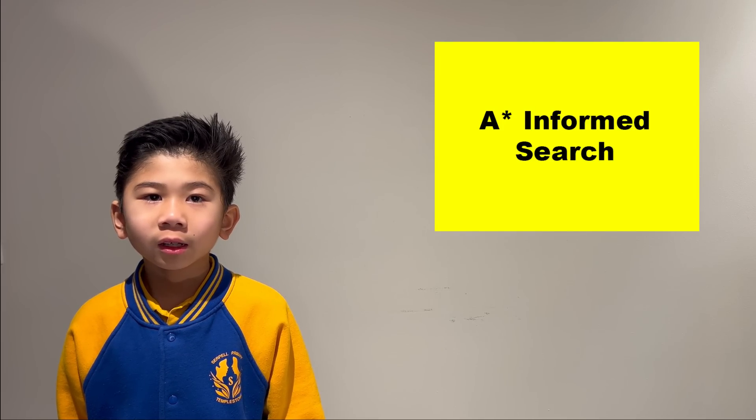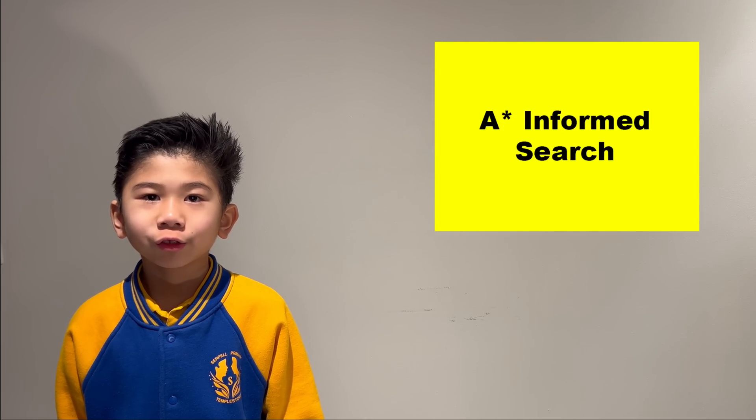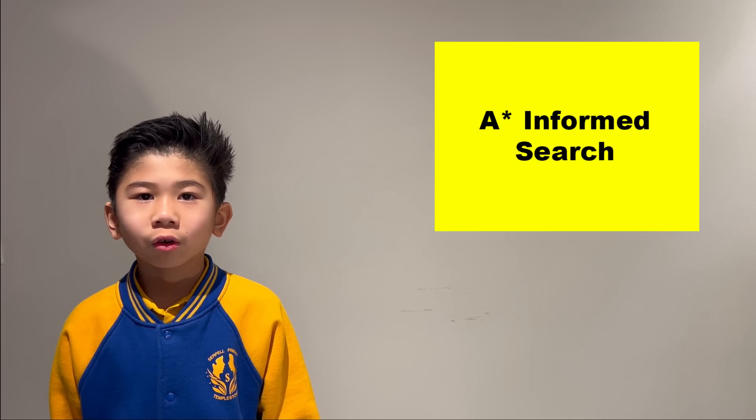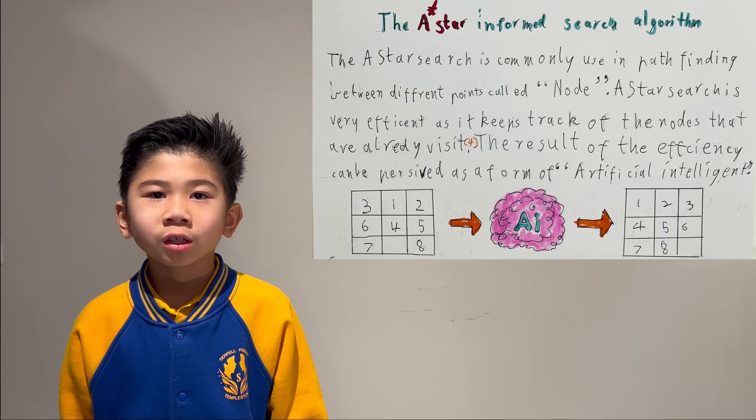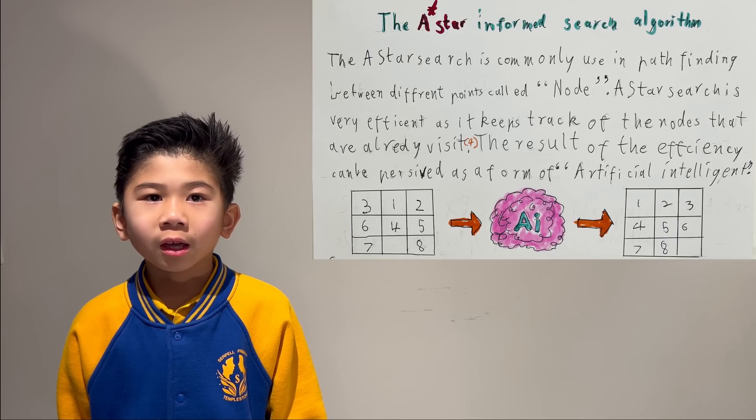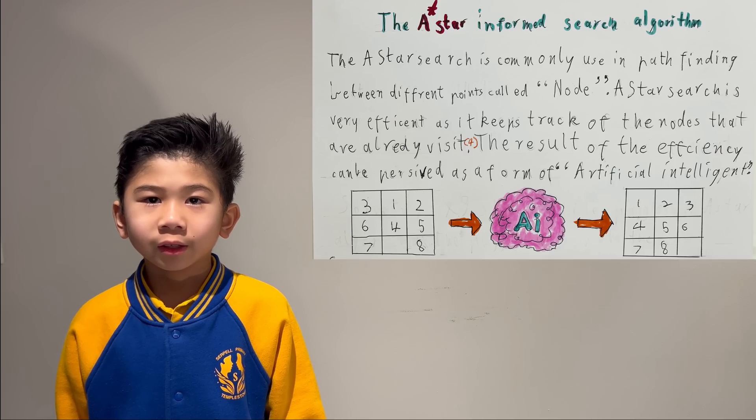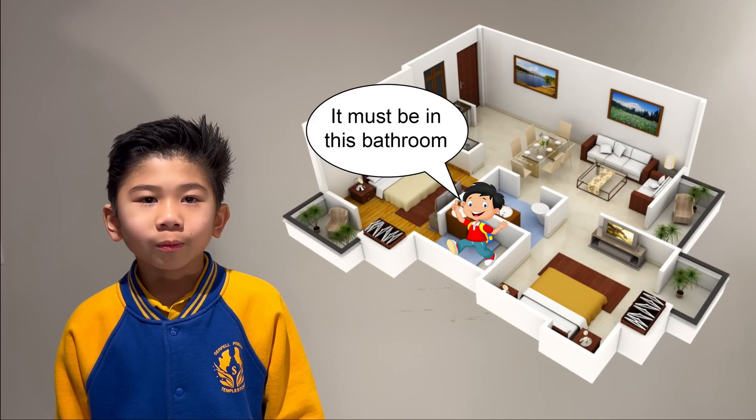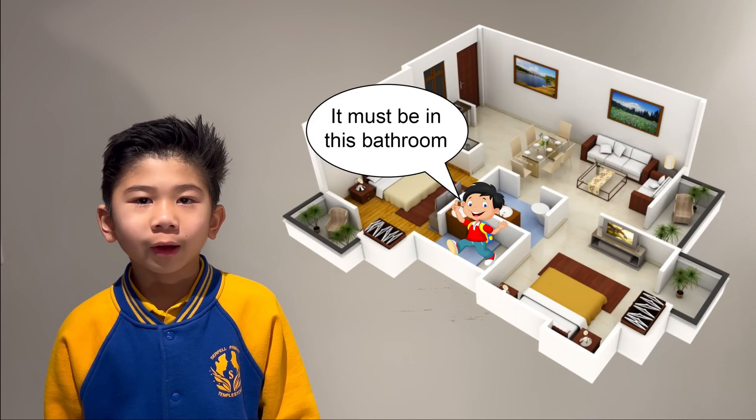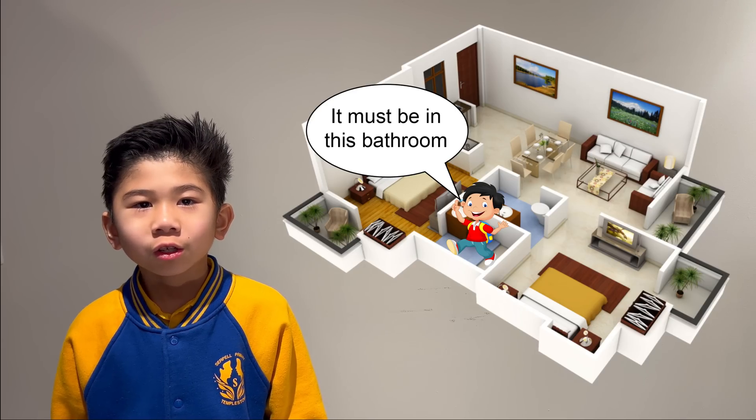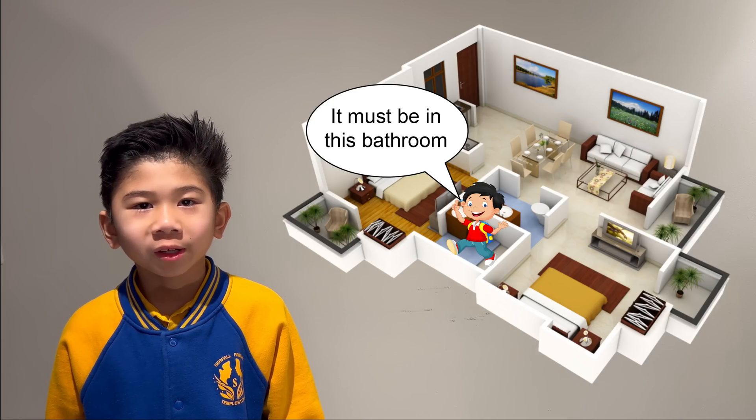The A-star informed search is naturally used in path finding between different points called nodes. A-star search is very efficient as it keeps track of the nodes that have been visited. The result of the efficiency can be perceived as a form of artificial intelligence. For example, I have already searched this bathroom for my toothbrush, so I won't go into the same room again.